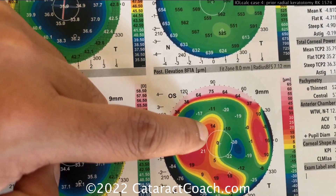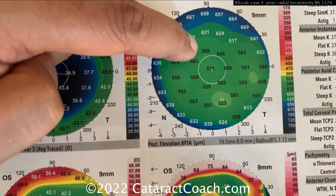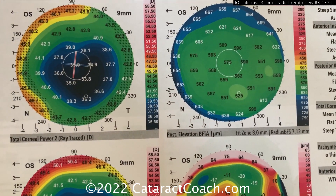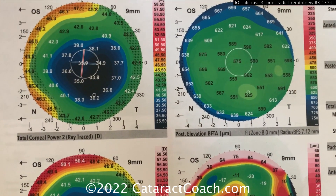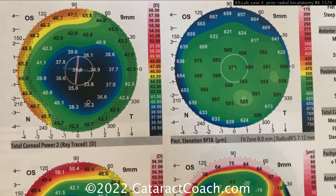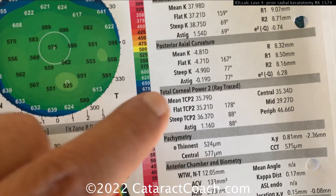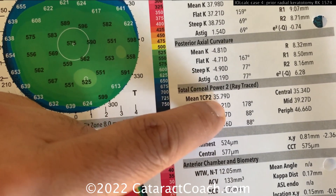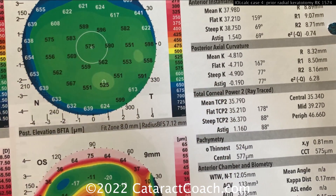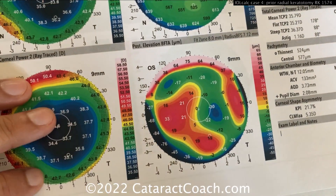There's the effect on the posterior elevation, and here's the thickness. The pachymetry is normal because RK is not taking away corneal thickness — it's just changing corneal curvature. The ray trace gives an average mean power in the center of about 35.79, so that's another good data point.